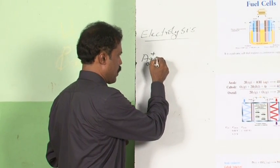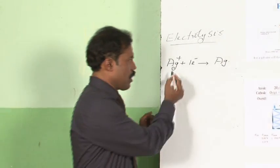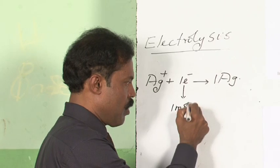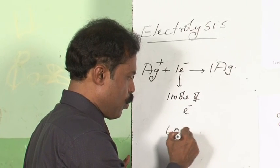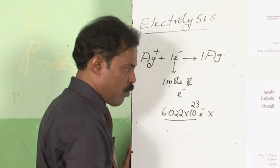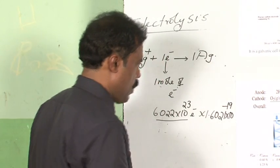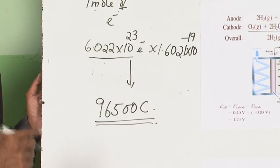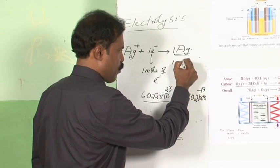If electrolysis of Ag+ is conducted, 1 mol of Ag will be deposited from 1 mol of electrons. One mole of electrons represents 6.022×10²³ electrons, and since the charge of one electron is 1.6021×10⁻¹⁹ coulombs, the charge carried by 1 mol of electrons comes to approximately 96,500 coulombs. This means 96,500 coulombs are required to deposit 1 mol of silver, which is approximately 108 grams.